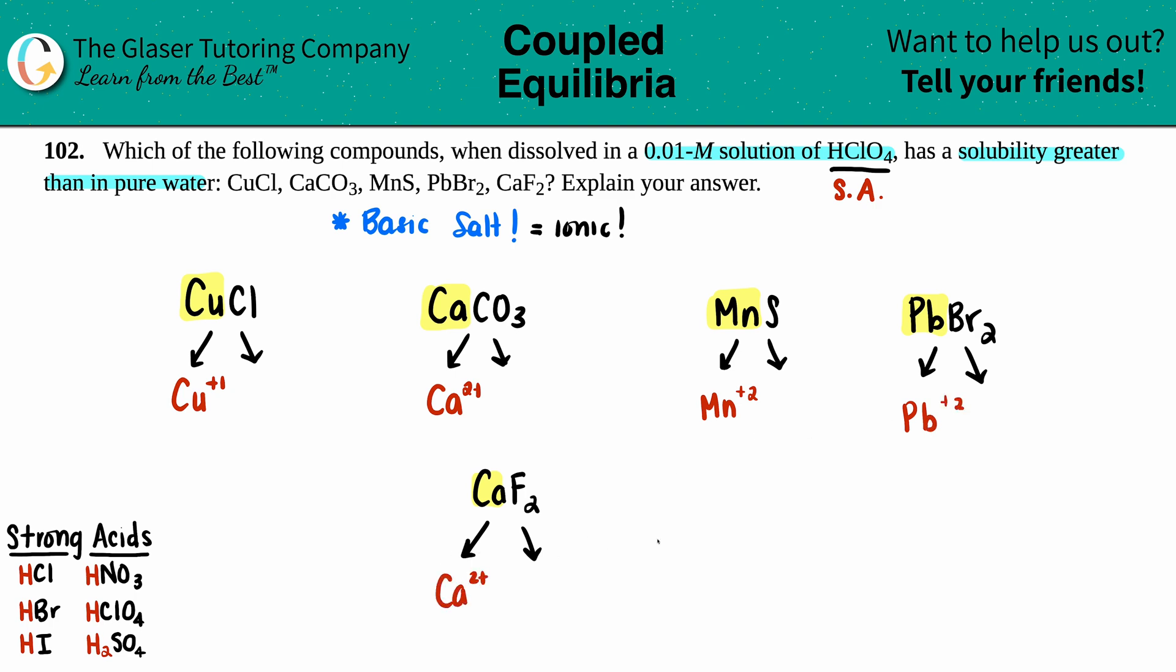Now your anion is always going to be the one in the back. So we have Cl, carbonate which is CO3, just the S, the bromine, and the F. We have Cl-, we have CO3 2-, carbonate is always a negative charge. We have sulfur which is 2-, we have bromine which is -1. It does not matter that we have two of them, we're just naming the ions. And then we have F-.